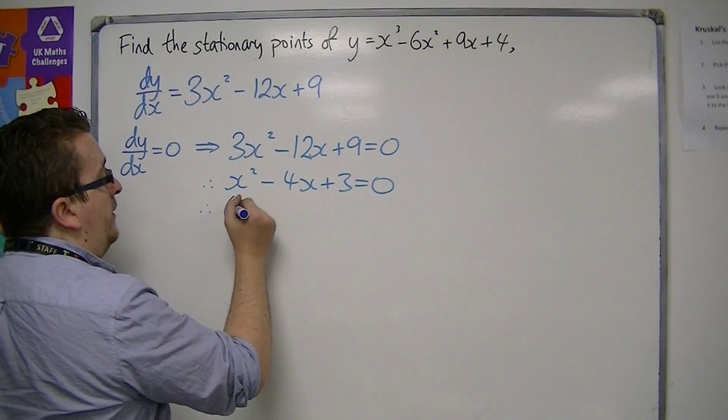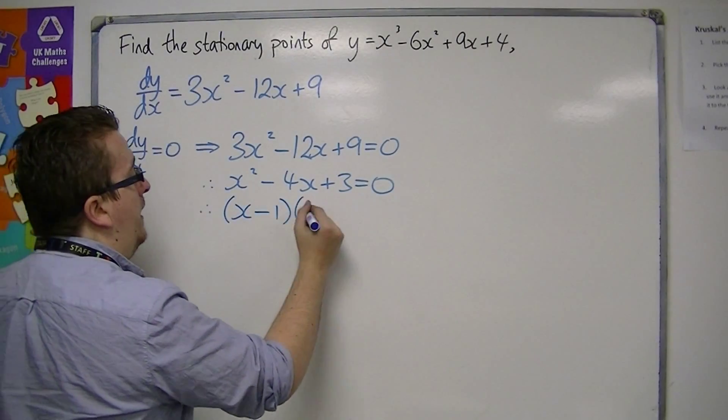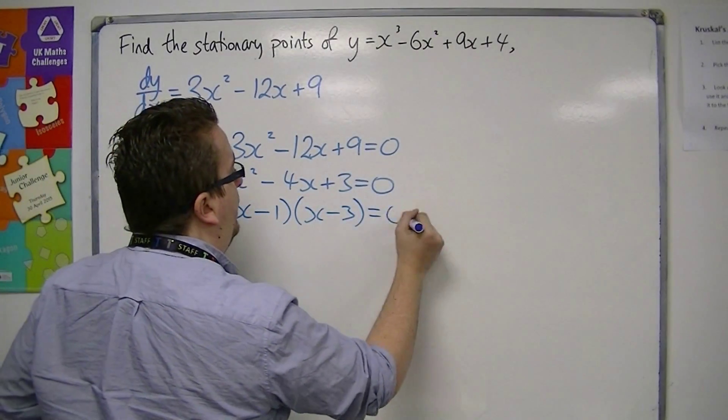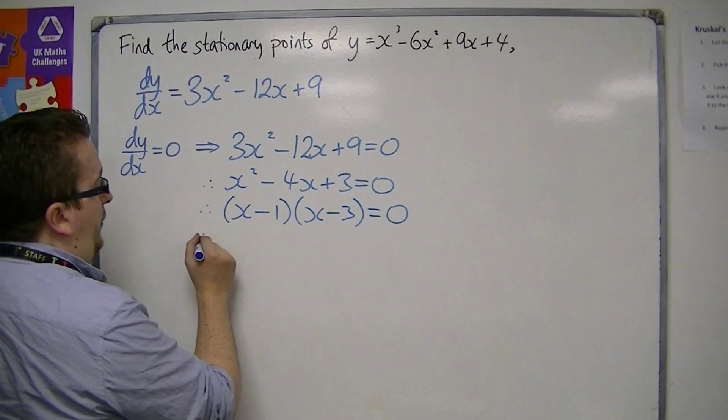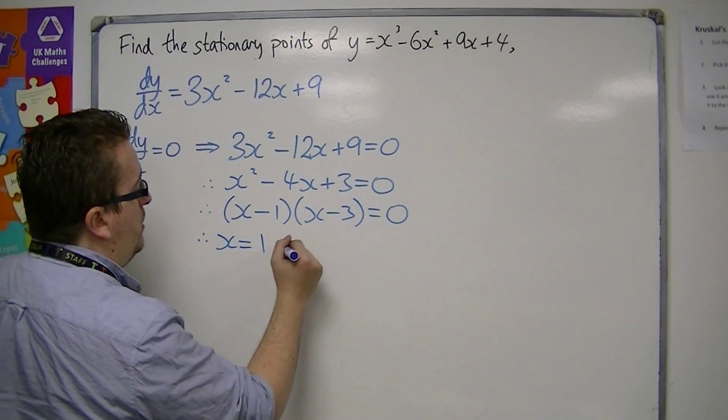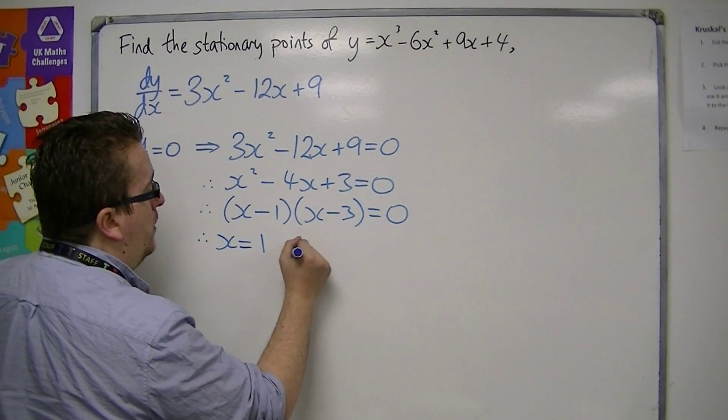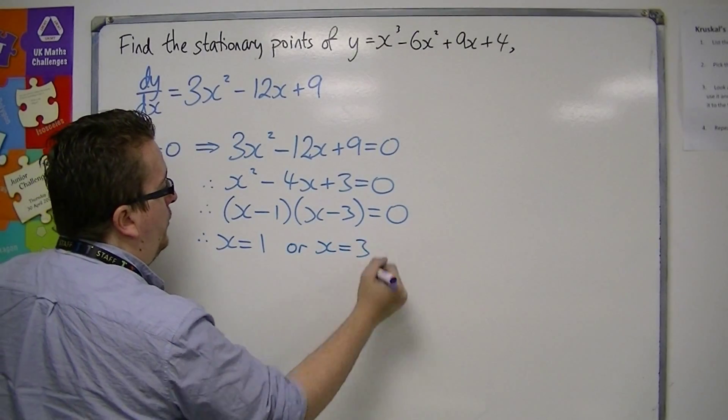This one we can factorise. So that's (x - 1)(x - 3) = 0. And so, the stationary points are x = 1 and x = 3.